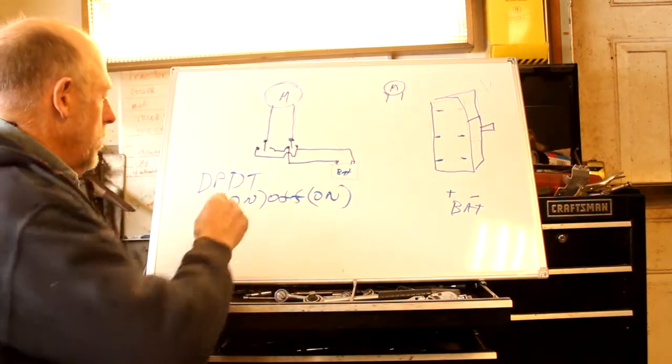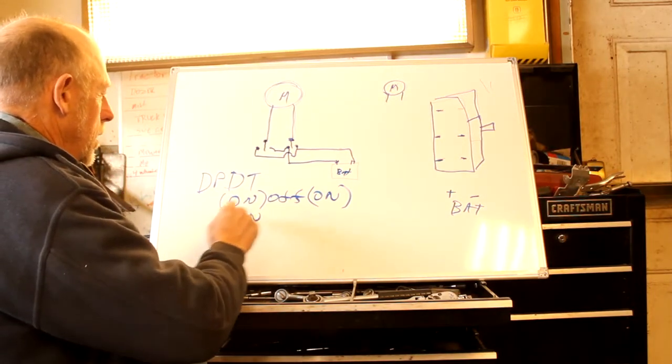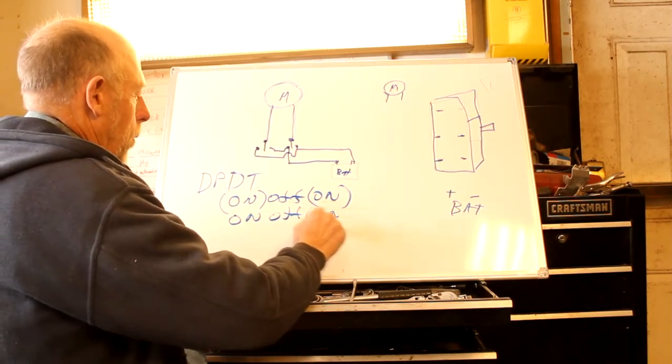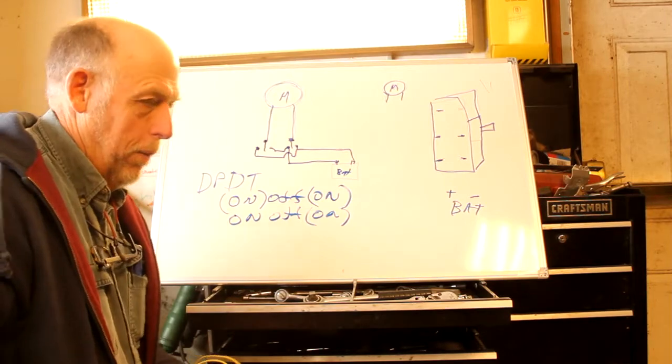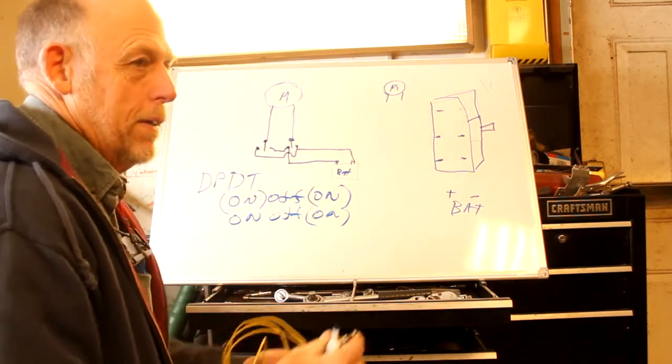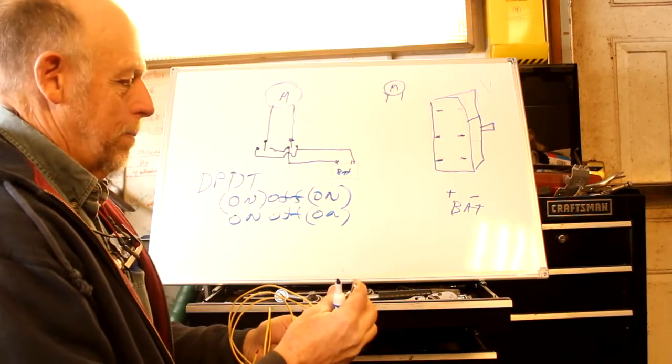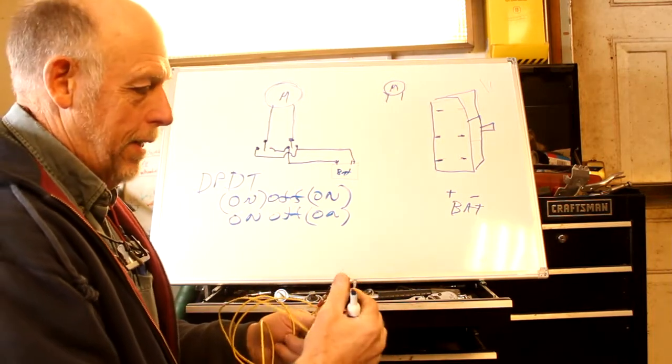For throttles I use an on-off and on-momentary, so that when I want to throttle up I can just hit it or hold it in the momentary position, or when I want to throttle down I just hit it and it stays there until it shuts off automatically.